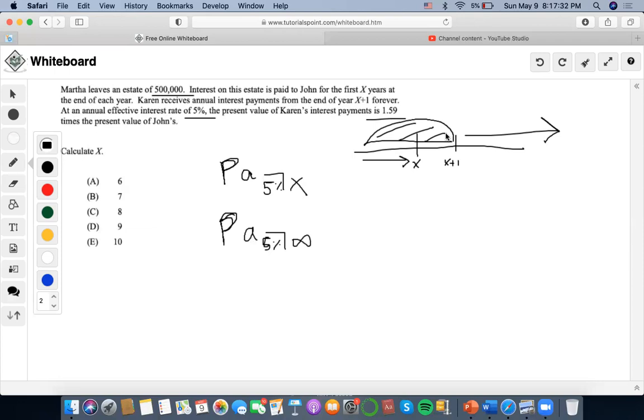So that would mean that we would have to denote her payout of interest as being deferred. So by being discounted by the amount of years that are missing, that we're not even sure by how many years are missing or deferred in this case. So we will just denote it as X.